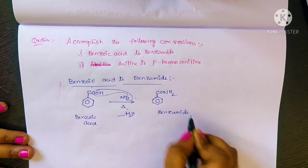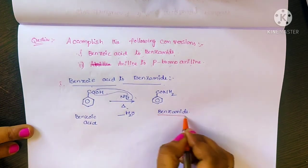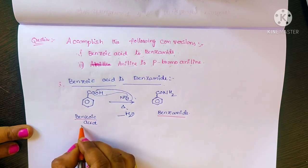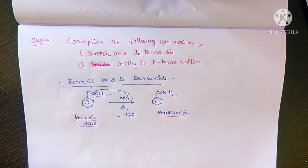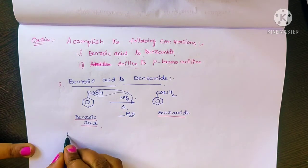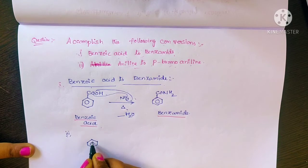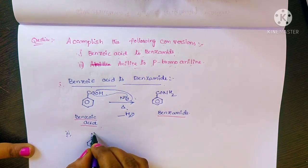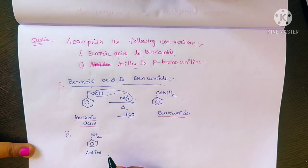Okay students, to recap: benzoic acid reacts with ammonia and heating to produce benzamide. Now for the second conversion — aniline to para-bromoaniline. What is aniline? A benzene ring containing an NH2 group is called aniline.